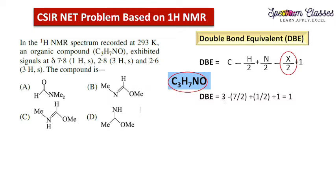Here the number of carbon atoms is 3, number of hydrogen atoms is 7, so 3 - 7/2 + 1/2 + 1. After solving this we get 1. So this molecule is having one double bond.